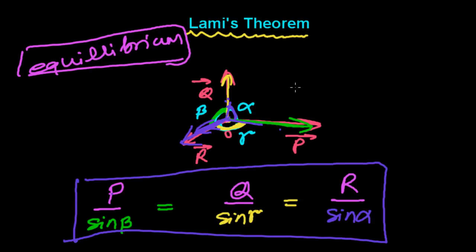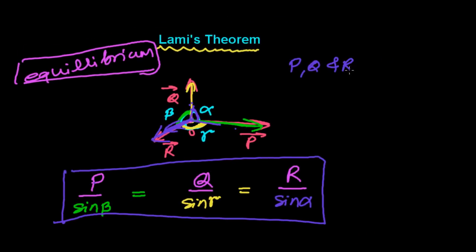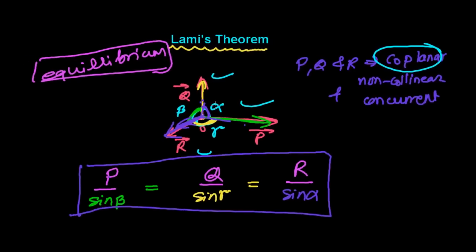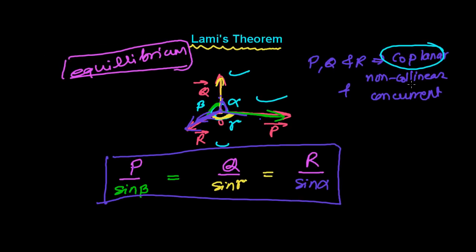One very important thing to keep in mind while learning Lami's theorem: forces P, Q, and R must be coplanar, non-collinear, and concurrent. Coplanar means all forces are on the same plane. Non-collinear means they are not acting along the same line — they should not all be together in a single line.